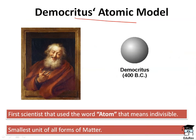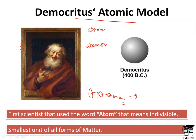Let's begin with the Democritus atomic model. Democritus was an ancient Greek philosopher who proposed the concept of atoms. He gave the word 'atomos.' He suggested that when an element is divided, and further divided, and further divided, a stage is reached where it can't be divided any further. This stage was given the Greek word 'atomos,' meaning indivisible, and through this Greek word, the current word 'atoms' came into existence.